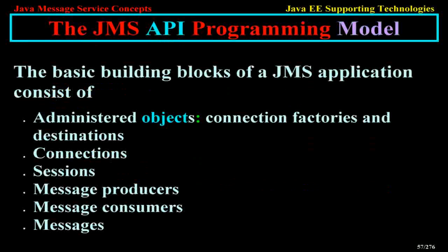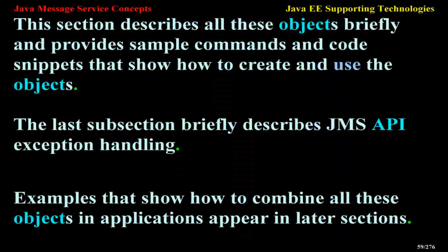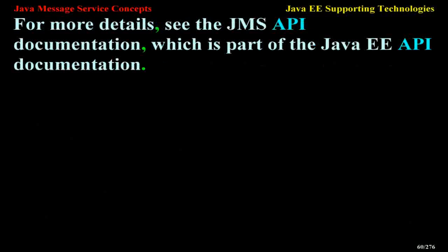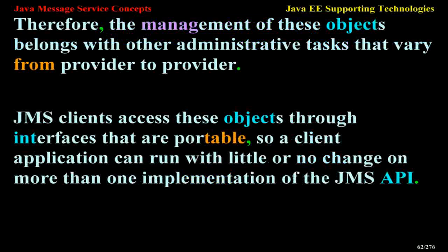The JMS API Programming Model. The basic building blocks of a JMS application consist of administered objects (connection factories and destinations), connection, sessions, message producers, message consumers, and messages. Figure 45-5 shows how all these objects fit together in a JMS client application. This section describes all these objects briefly and provides sample commands and code snippets that show how to create and use the objects. The last subsection briefly describes JMS API exception handling. For more details, see the JMS API documentation, which is part of the Java EE API documentation.